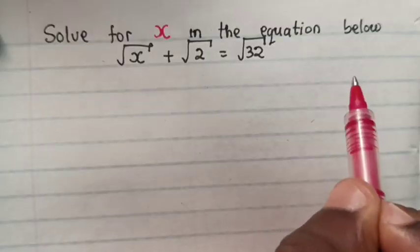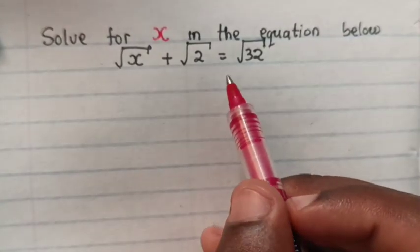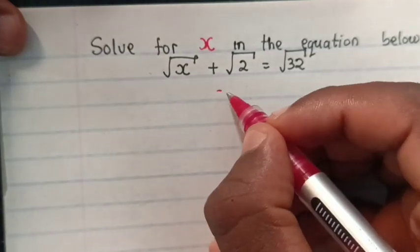How can we solve for x in this Olympiad Mathematics question? Let's see. Solve for x in the equation below: square root of x plus square root of 2 is equal to square root of 32.